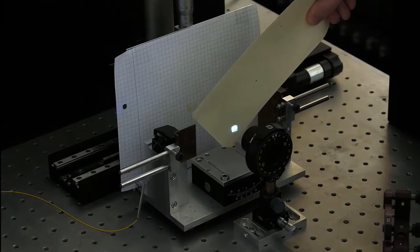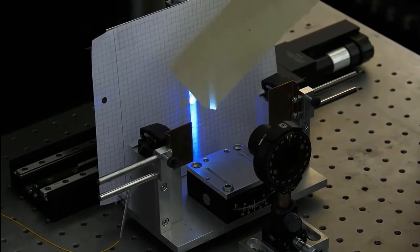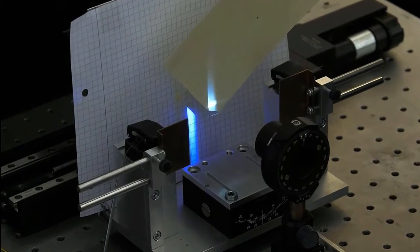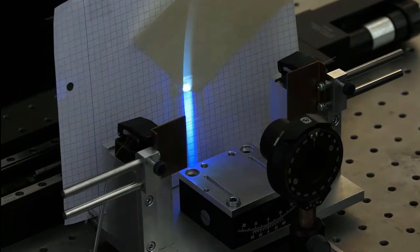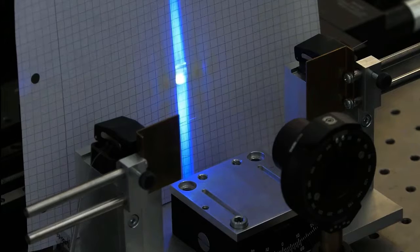We can see that we are already hitting the fiber with the blue beam. We know that we are hitting the fiber, because we see a diffraction pattern at the screen. Looking closely, we can observe the small focus of the beam exactly at the place of the fiber.